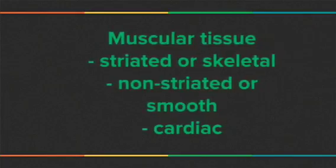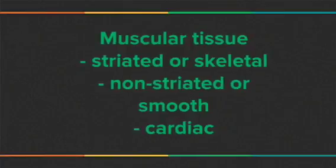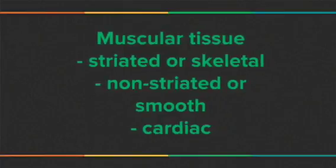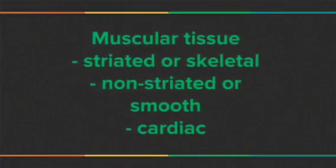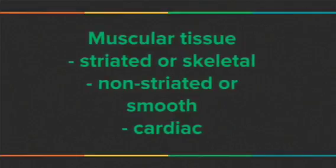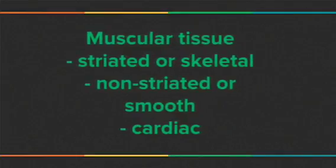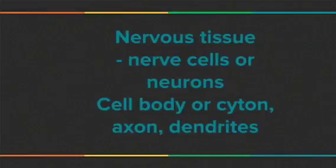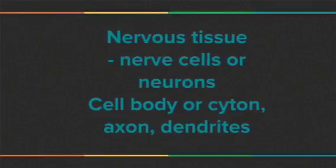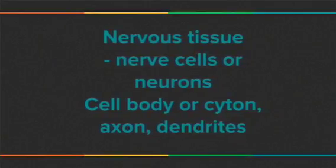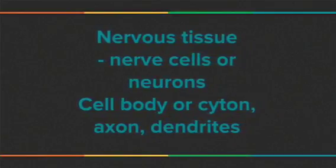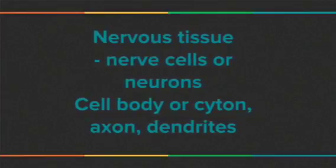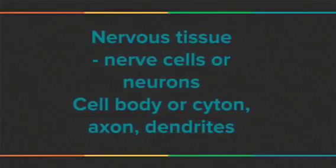Muscular tissue is of three types: striated skeletal muscle, which is voluntary; non-striated smooth muscle, which is involuntary; and cardiac muscle, which is also involuntary. Nervous tissue is made up of nerve cells or neurons. They have three parts: cell body, cyton, axon, and dendrites.